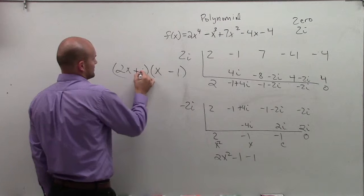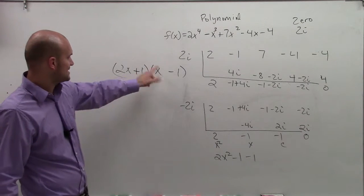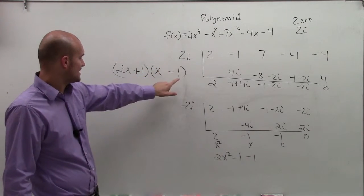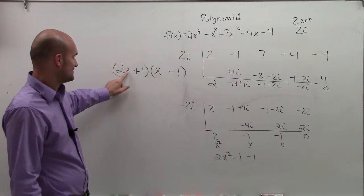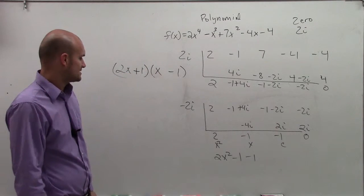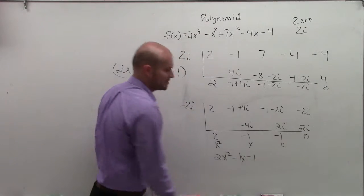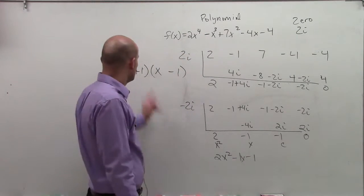How about if I did this? So I do 2x times x is 2x squared, 1 times negative 1 is negative 1. Negative 1 times 2x is negative 2x plus 1x, that's an x. x terms. Sorry, forgot a little bit about that.